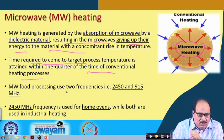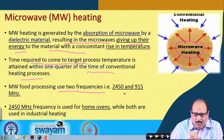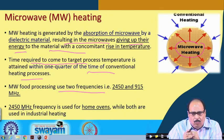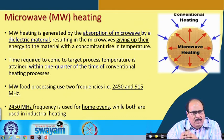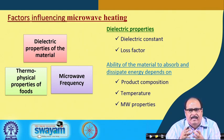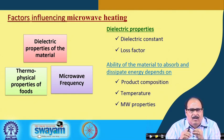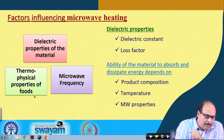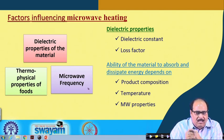Microwave food processing uses two frequencies: 2450 and 915 megahertz. Normally 2450 megahertz is used for home ovens, whereas for industrial ovens both 2450 and 915 are used. The microwave heating process is influenced by certain factors: the dielectric properties of the material, thermophysical properties of the food, and frequency of the microwave used.